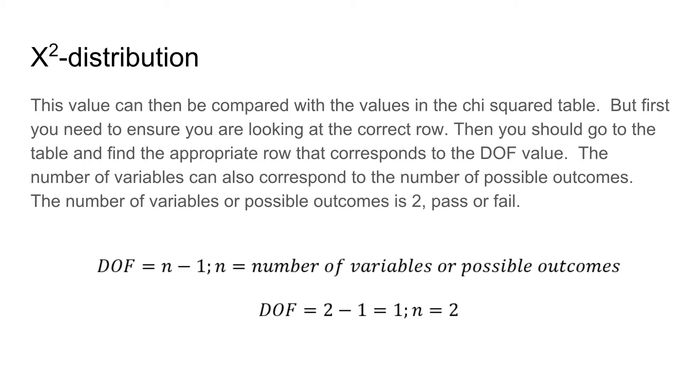To find the correct row, you need to know your degrees of freedom. In the chi-squared table, the degrees of freedom equals the number of variables or possible outcomes minus 1. In this situation, we have two possible outcomes, pass or fail, so 2 minus 1 gives us a degrees of freedom of 1.